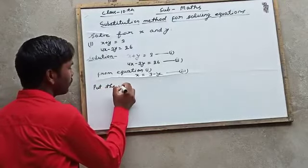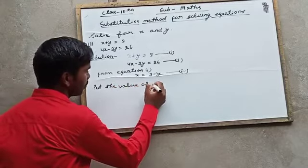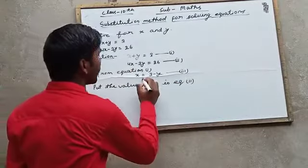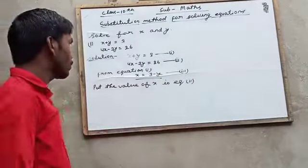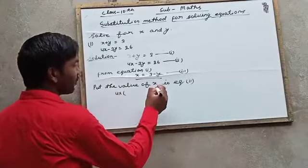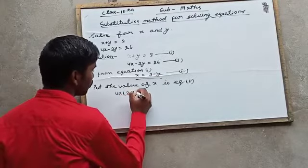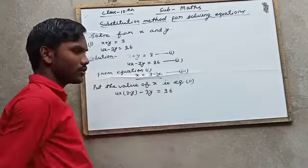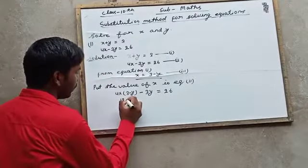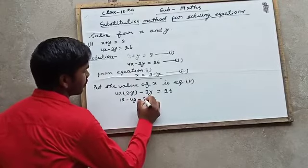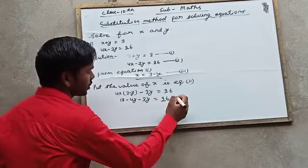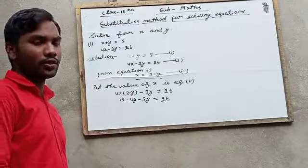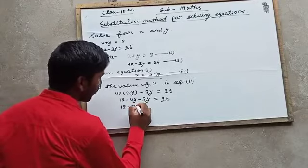So put the value of x in equation two: 4 times (3 minus y) minus 3y is equal to 26. Now 4 times 3 is 12 minus 4y minus 3y is equal to 26. These both 4y and 3y are negative so it will add. 12 minus 7y is equal to 26.